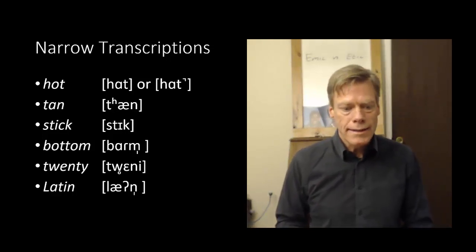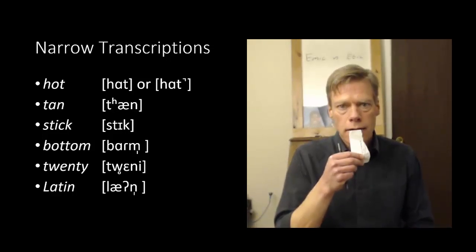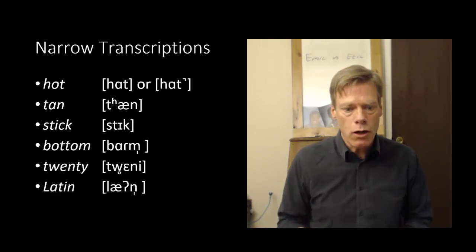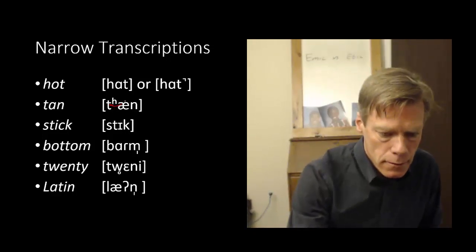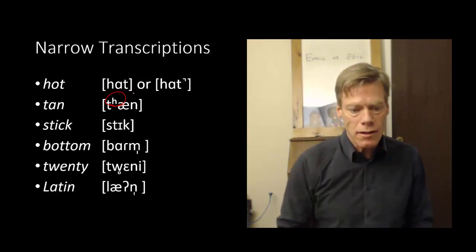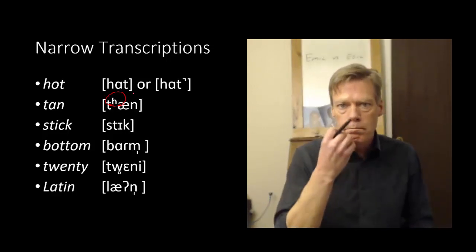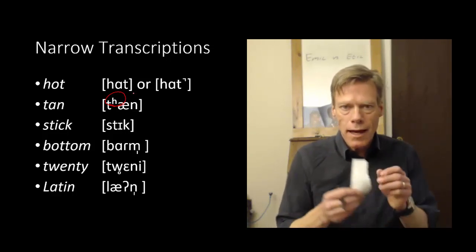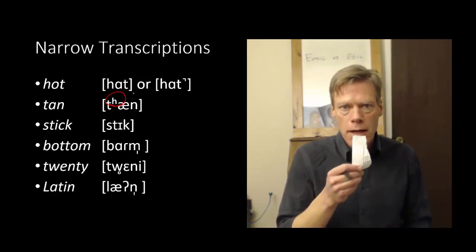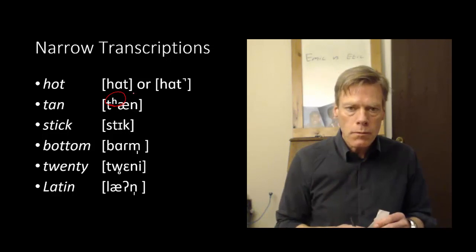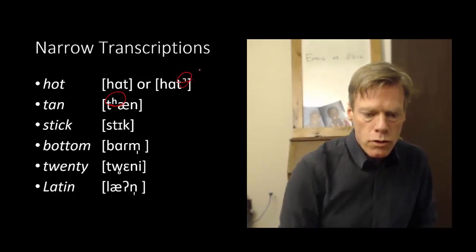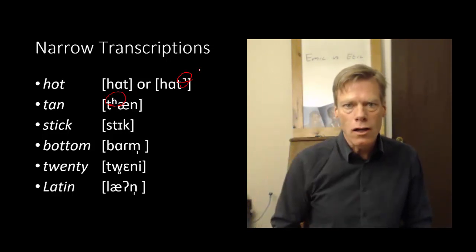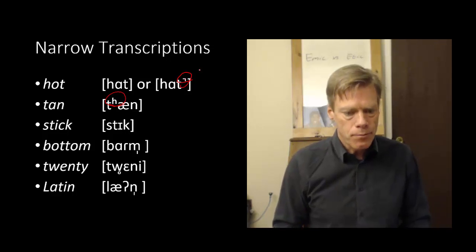Now compare that to the word tan. Tan, tan. Now here you really see that paper moving because this is what we call an aspirated T. So that aspirated, that little H, that superscript H, what it means is that there's a burst of air that comes out before I go into the vowel. So it's that burst of air that causes the paper to flap. Tan, tan. In this case, we use that little angle bracket to show that it is glottalized or unreleased.